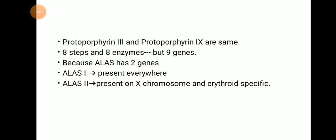Protoporphyrin 3 and protoporphyrin 9 are the same. There are 8 steps in heme synthesis, 8 enzymes, but 9 genes. These 8 enzymes are coded by 9 genes because ALAS has 2 genes: ALAS1 and ALAS2. ALAS1 gene is present everywhere in our body, but ALAS2 is present only on the X chromosome and is erythroid specific.